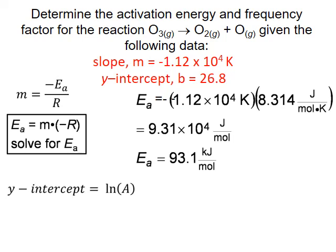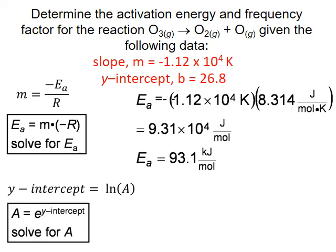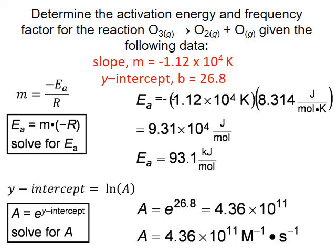We can also calculate the frequency factor using the y-intercept. We need to get rid of the natural log, so we raise both sides to the base e. A then equals e raised to the value of the y-intercept — in this case, 26.8. When we enter this into our calculator, we get 4.36 times 10 to the 11th. The units of the frequency factor must be the same as the rate constant units: moles per liter to the negative 1 times seconds to the negative 1.